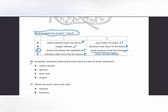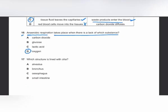MCQ number 16: anaerobic respiration takes place when there is a lack of oxygen. MCQ number 17: anaerobic respiration occurs in the absence of oxygen and involves the breakdown of glucose without oxygen.